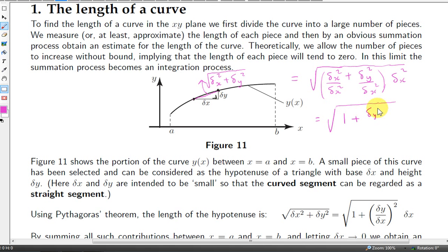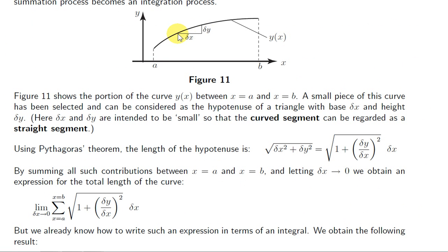Now we get delta x squared over delta x squared, which is 1, and here we just have delta y squared over delta x squared. All of this is multiplied by delta x squared, but we can take the square root sign over each factor. The square root of delta x squared is delta x, and we can write delta y squared over delta x squared as delta y over delta x, all squared. This approximates the length of one particular segment.